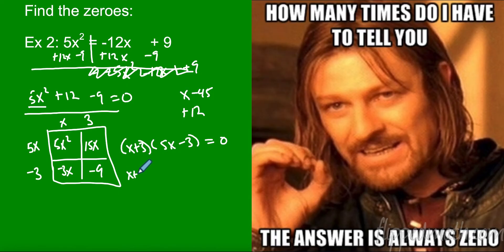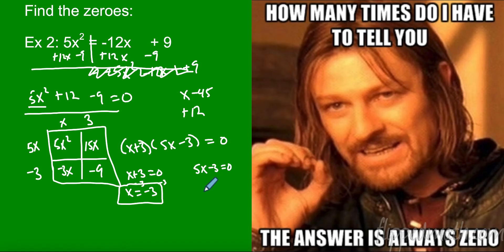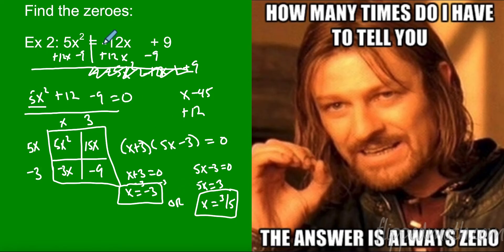Using the Zero Product Property: x + 3 could equal zero, or 5x − 3 could equal zero. Subtracting 3 gives x = −3. Adding 3 gives 5x = 3, divide by 5, so x = 3/5. Those are two possible answers — they find my zeros. They're called zeros because it's where the graph crosses the x-axis, where y is zero.